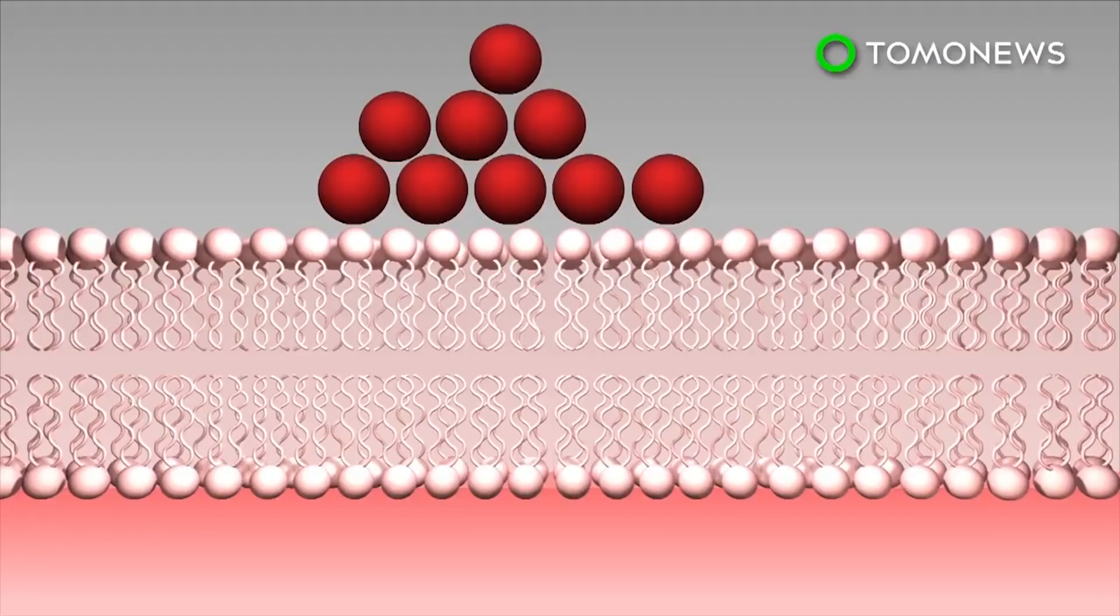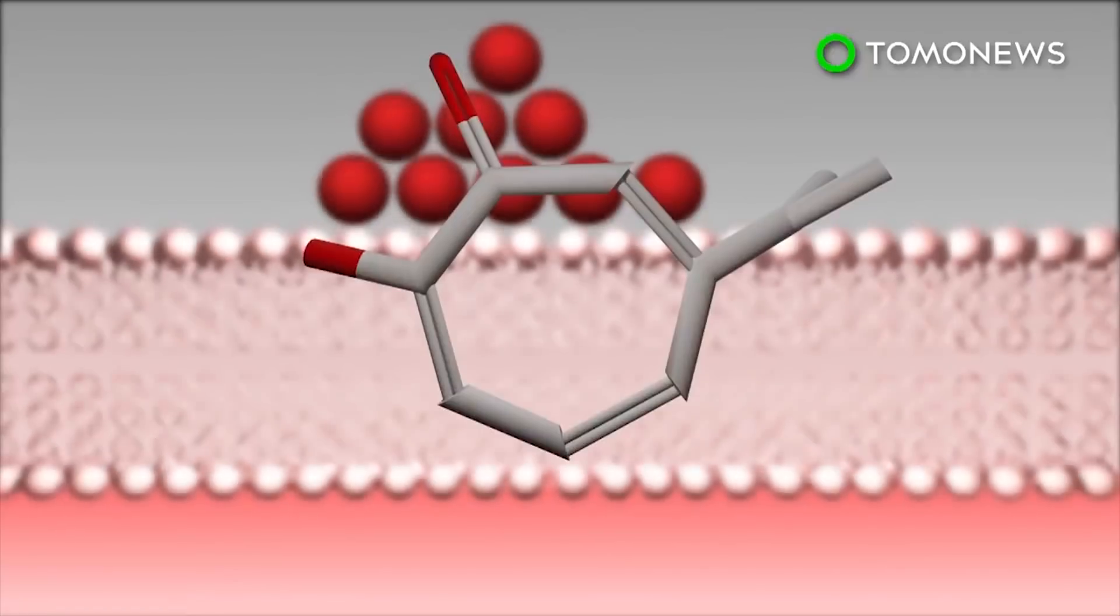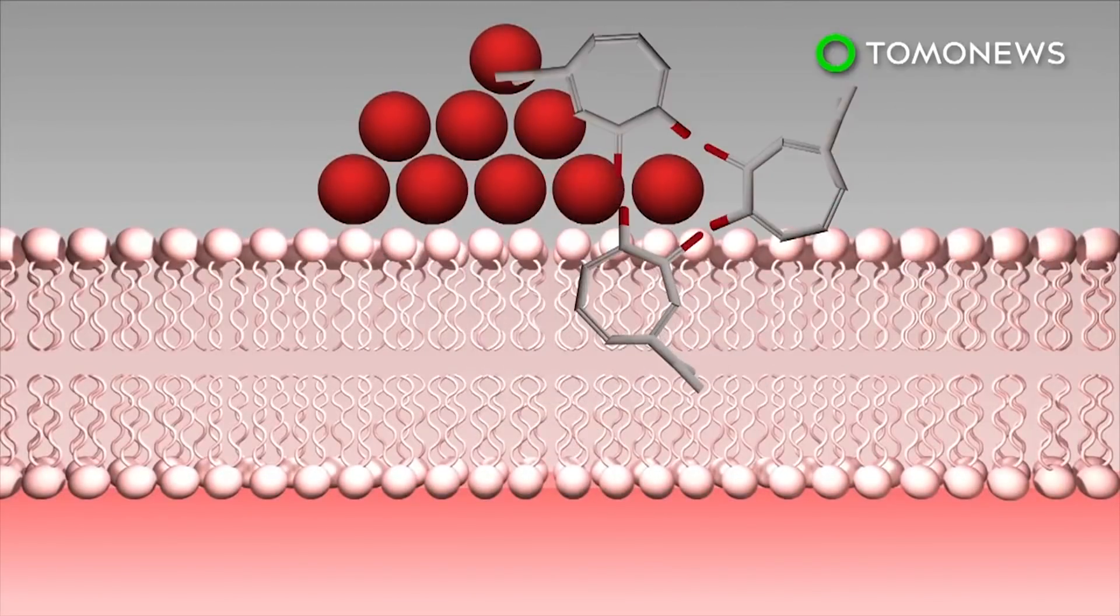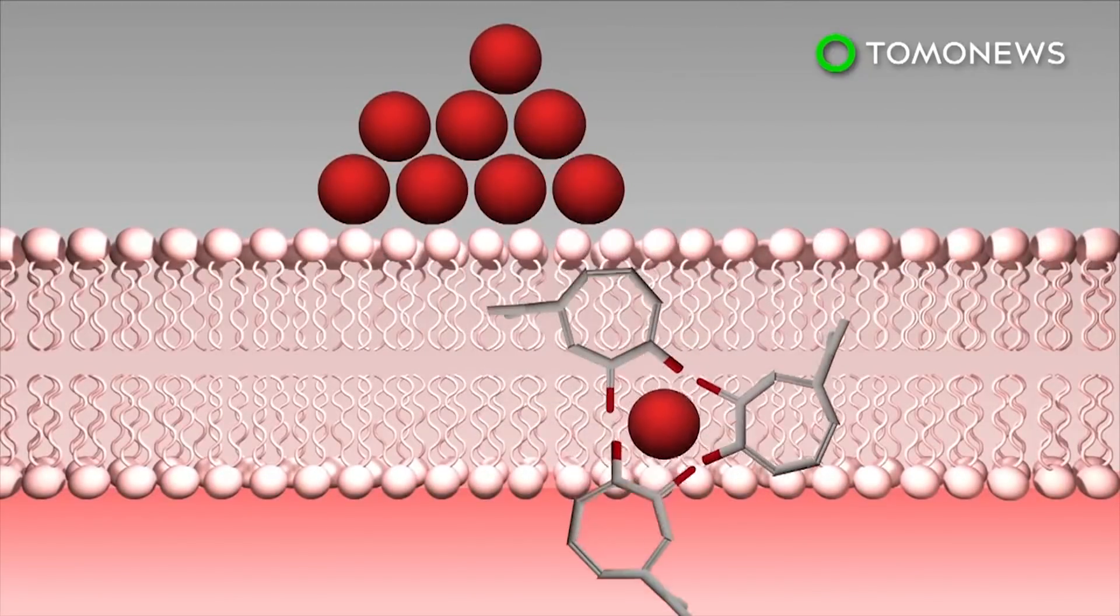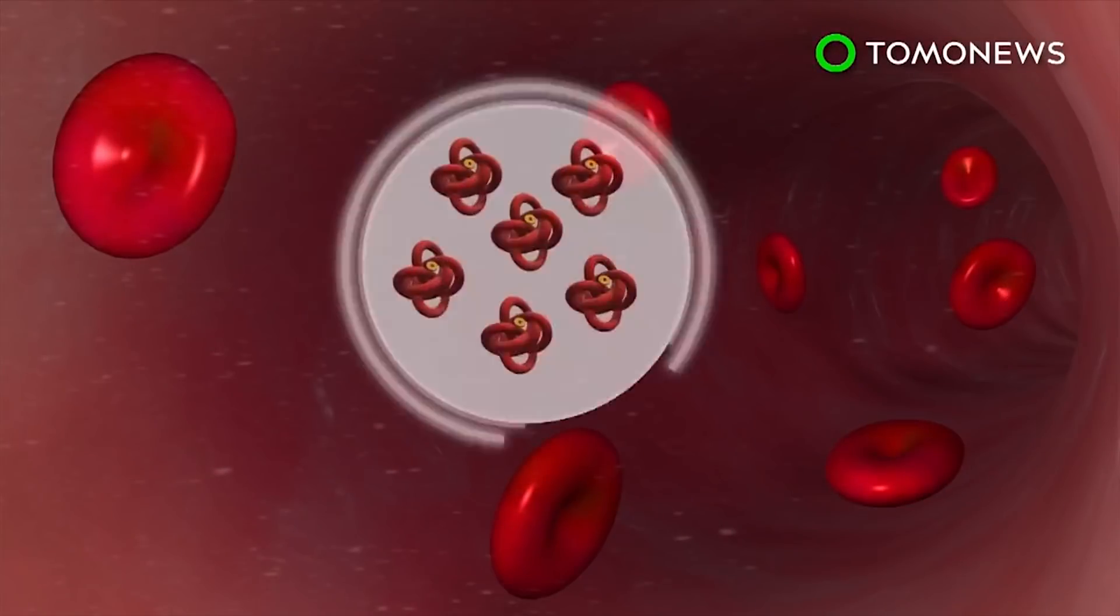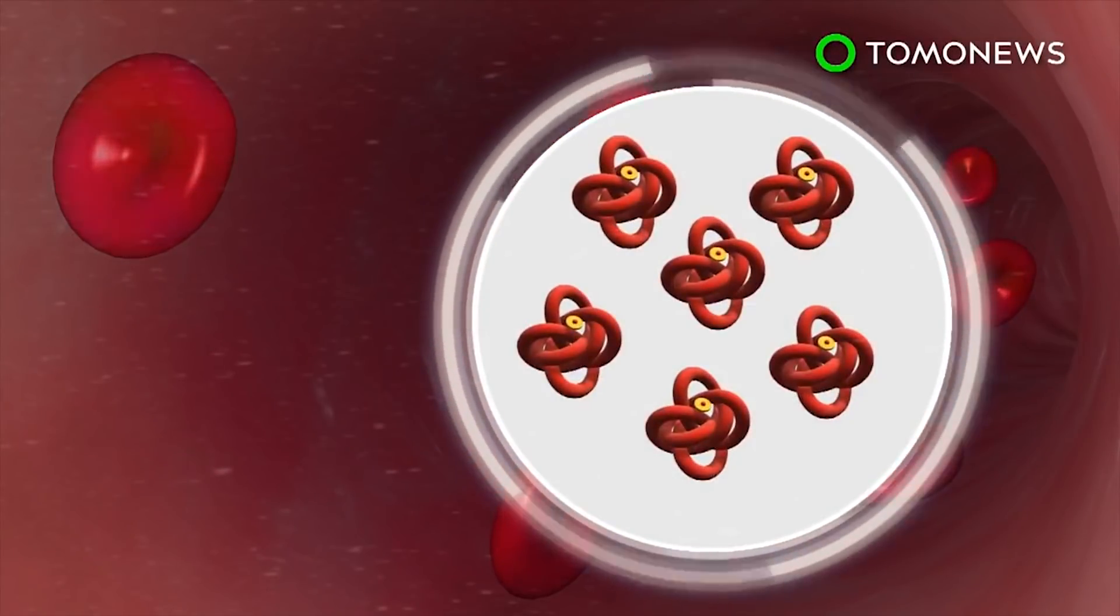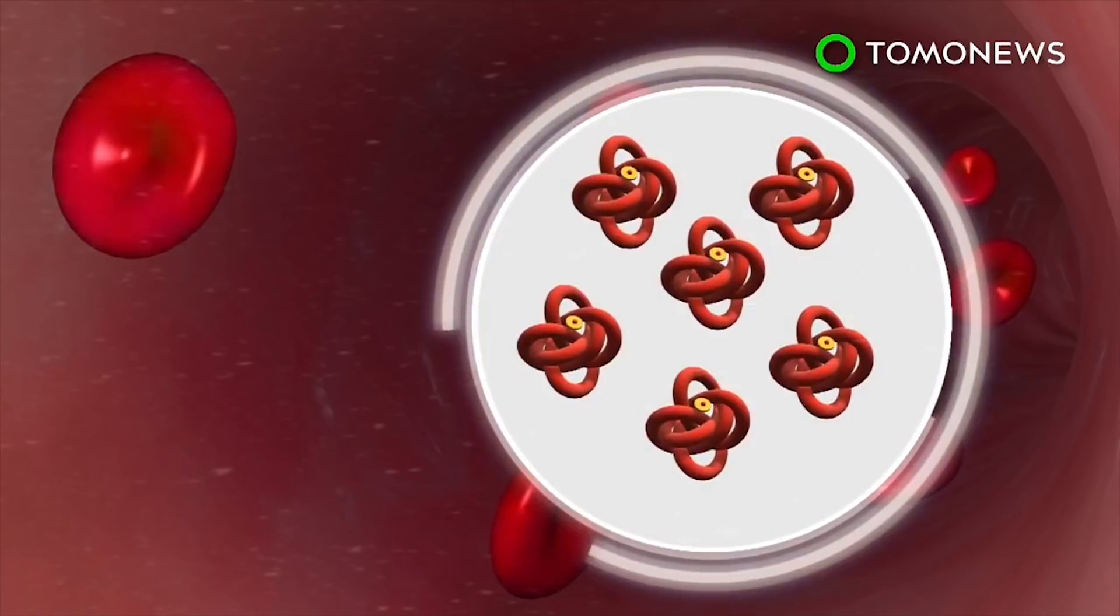A trio of hinokitiol molecules has been found to restore the transporter function. The polar ends bind to iron, while the nonpolar ends create a shield, allowing it to cross into the cell membrane. With cells now receiving iron, hemoglobin production and red blood cell count are both restored to normal levels.